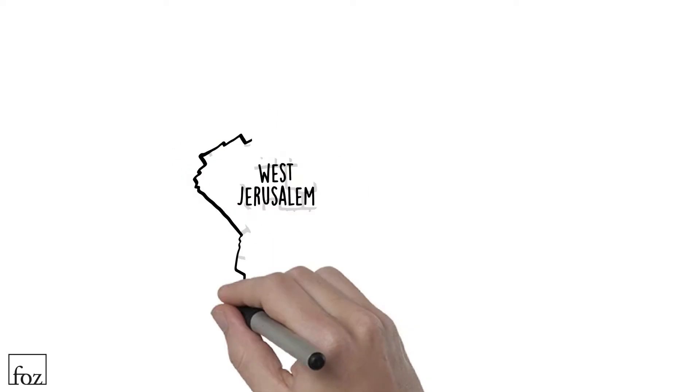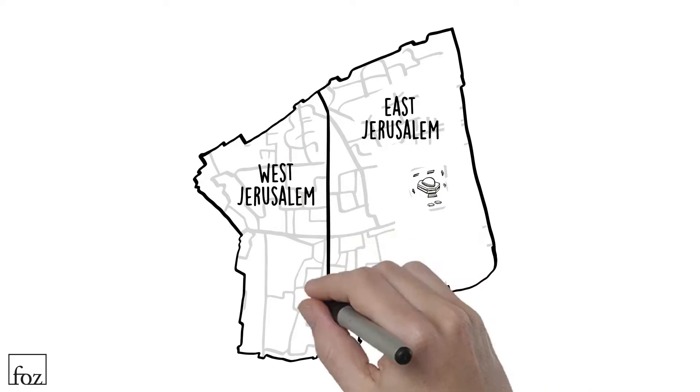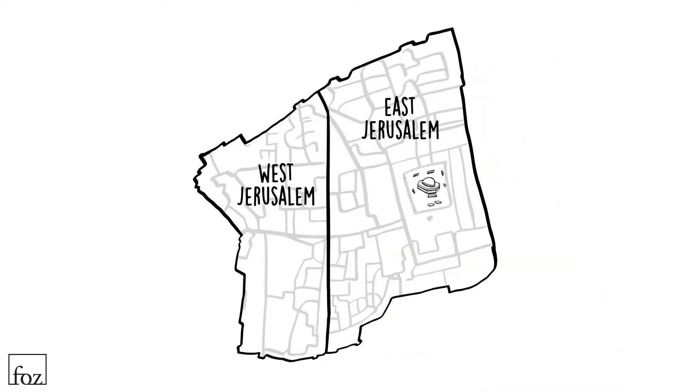The Arab-Israeli war that followed resulted in a divided city. Western Jerusalem became Israel's capital city, while Eastern Jerusalem, including its many holy sites, was occupied by Jordan.